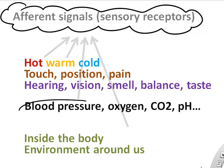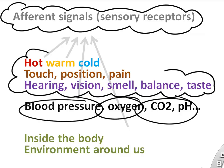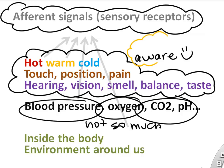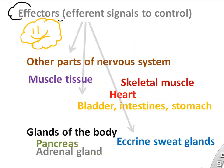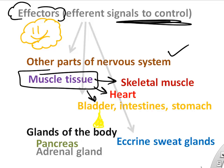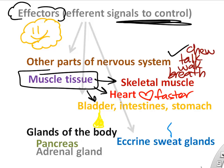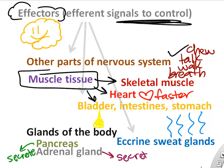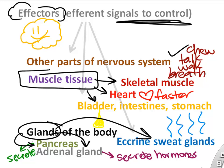If we look at afferent signals, there's a list of sensations — most you might be aware of, but many are not, like your blood pressure, oxygen level, or pH. In terms of effectors, the list is simple: muscle tissue including skeletal muscle, heart muscle, and the bladder — with only voluntary control over skeletal muscle. Effectors also include glands such as sweat glands and endocrine glands that make hormones.